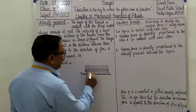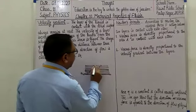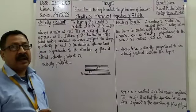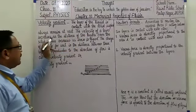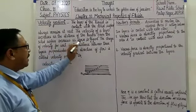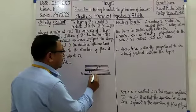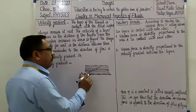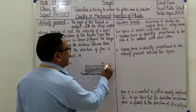उससे ऊपर जो layer होगी उसकी velocity increasing order में होगी और सबसे जो higher velocity है वो ऊपर वाली layer की होगी जिसे हम free layer बोलेंगे। उसकी velocity comparison में other layers के maximum होगी। The velocity of a layer increases as the distance of the layer from the solid surface increases, as shown in figure. Solid surface से जैसे layer की distance increasing order में जाएगी, वैसे वैसे उस layer की velocity increasing order में होगी और सबसे ऊपर वाली layer की velocity maximum होगी।